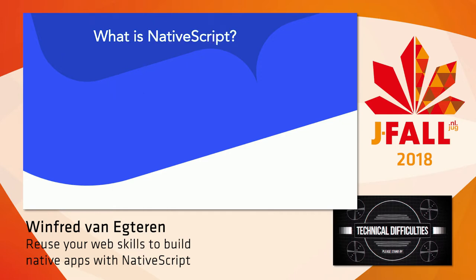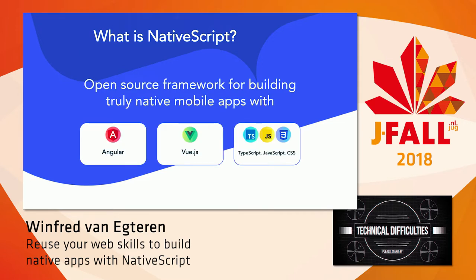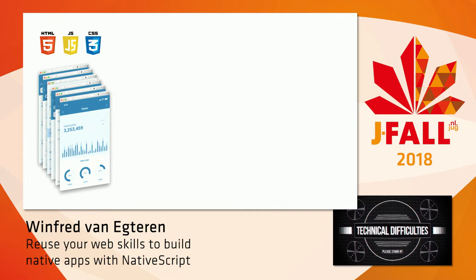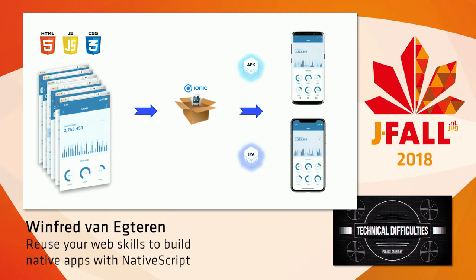Let's get started with NativeScript. NativeScript is an open source framework that allows you to build native mobile apps with the skills you probably already have. You can use TypeScript or vanilla JavaScript, or more opinionated frameworks like Vue.js or Angular. It's not like Cordova — you still build from one single code base, but it's different. Cordova or Ionic builds a web application packaged as a mobile app running in a web view, whereas NativeScript differs from those hybrid solutions.